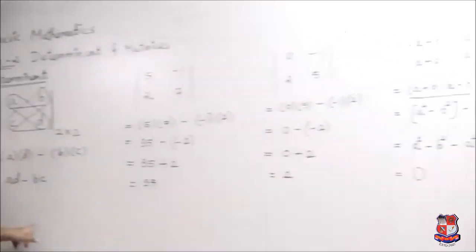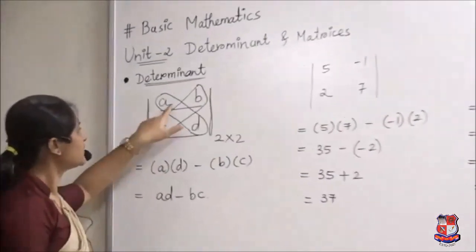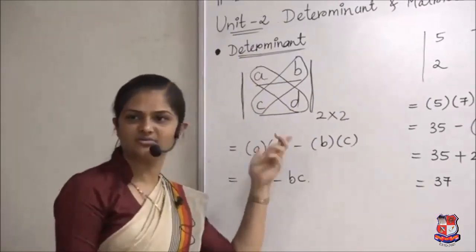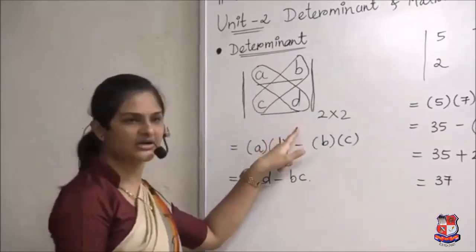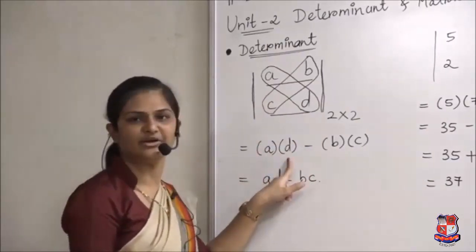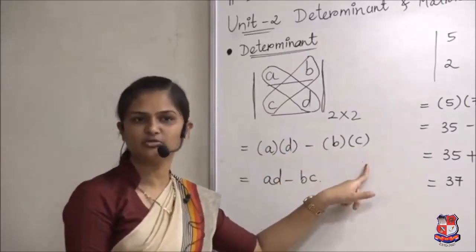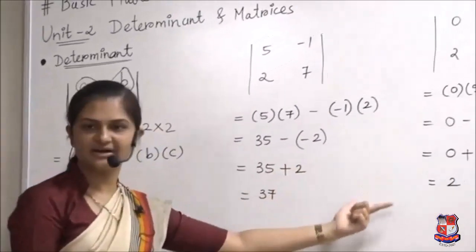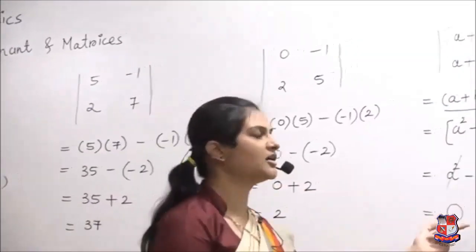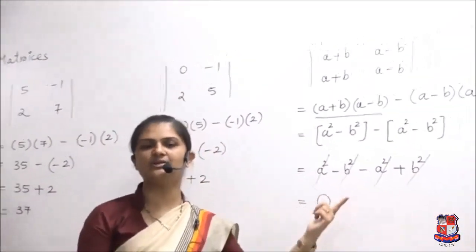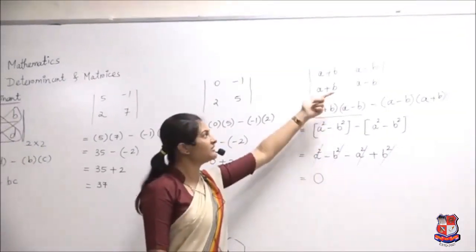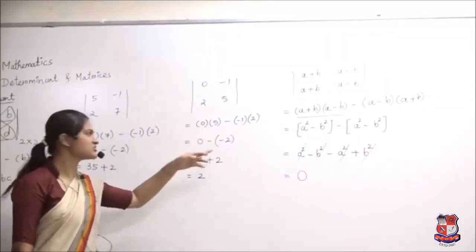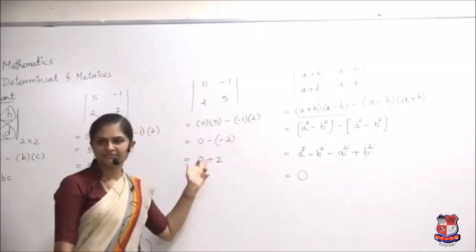To summarize determinants: we have 4 terms in modulus symbol arranged in 2 rows and 2 columns, making it a second order determinant. To find its value, use the formula: first and fourth element multiplication minus second and third element multiplication. This formula we must follow. We covered three examples - two numeric examples and one variable example. In exams, variable examples often appear as three mark questions.